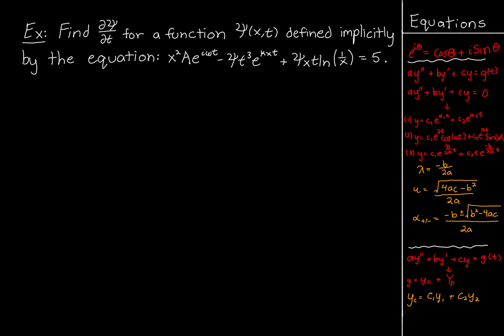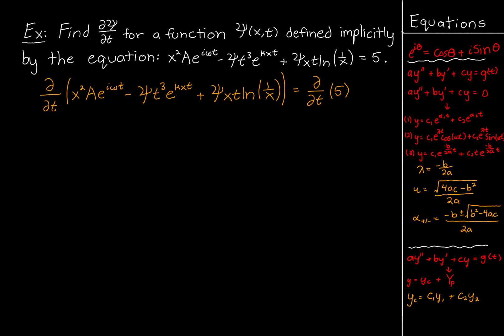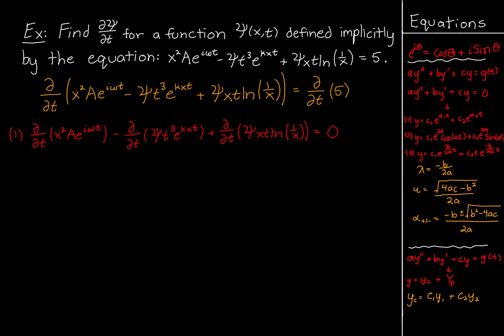This example asks us to find ∂ψ/∂t for a function ψ defined in terms of input variables x and t, defined implicitly by the equation: x squared a e to the i omega t minus ψ t cubed e to the kxt plus ψ x t ln(1/x) equals 5. To start, we take ∂/∂t on both sides of this implicit equation. The partial derivative of any constant equals zero, so the right side becomes zero. We distribute ∂/∂t across each term on the left side.